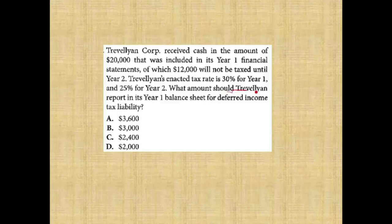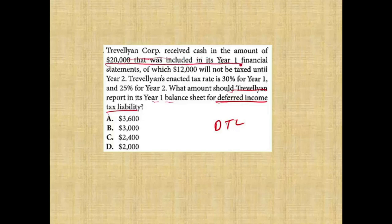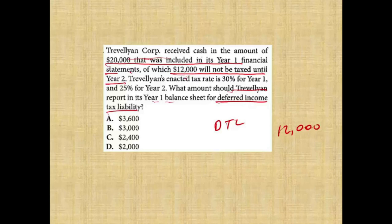What amount should T report in year one balance sheet for deferred income tax liability? T received cash of $20,000 included in year one financial statements, of which $12,000 will be taxed in year two. So $12,000 is the temporary difference. T's enacted tax rate is 25% for year one but 25% — no, 25% for year two. $12,000 times 25% equals $3,000. Therefore deferred tax liability equals $3,000.